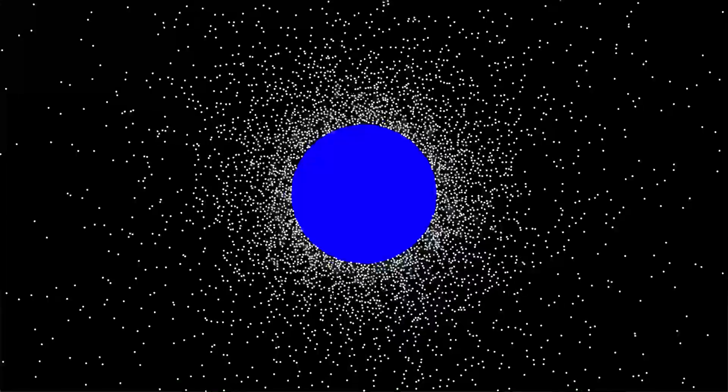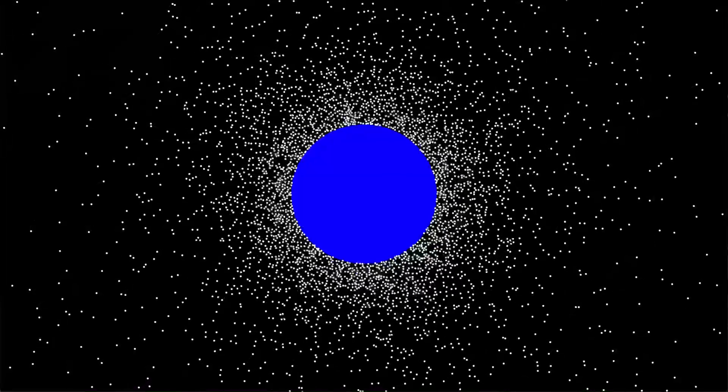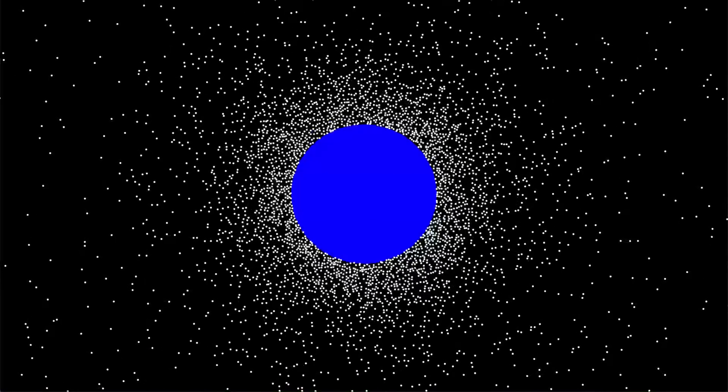Again we see a pressure gradient with a vacuum at the top and sea level at the bottom. You can also see there's no compelling reason for the molecules at the top of the atmosphere to whizz off into space. Some of them do, but gravity keeps most of them returning to earth.